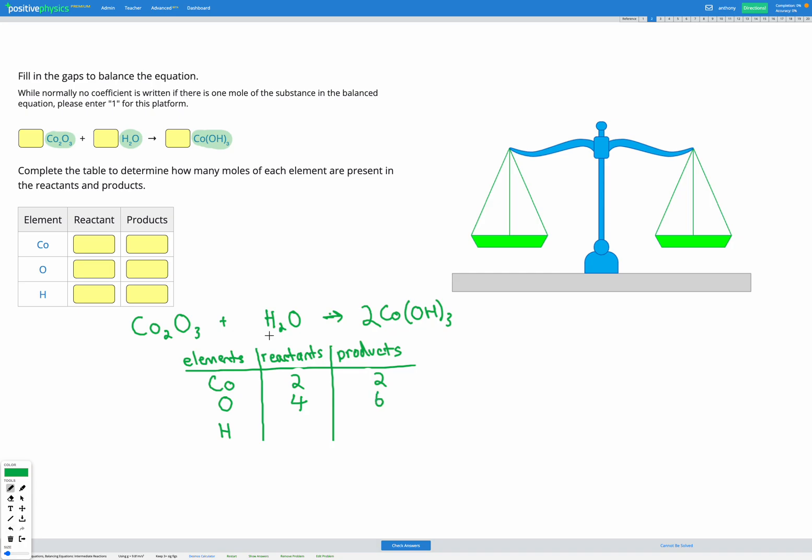Then for the H, I have H2 before. So that's two H's before. And after again, I have this OH with a subscript three. That's three H's. And I have the coefficient two. So I've got two sets of that. So two times three is six H's after. OK. So now we can see our Co is looking good. We've got two and two. That's balanced.